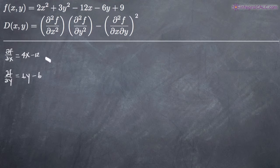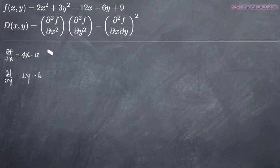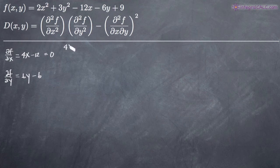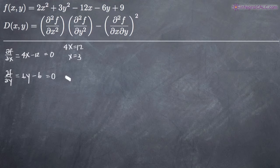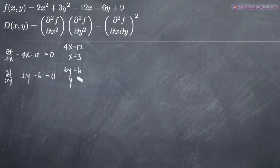Once we've taken the first-order partial derivatives, we need to set both of them equal to 0 and solve for their respective variables. We set 4x minus 12 equal to 0, add 12 to both sides to get 4x equals 12, then divide by 4 to get x equals 3. We set 6y minus 6 equal to 0, add 6 to both sides to get 6y equals 6, then divide by 6 to get y equals 1.